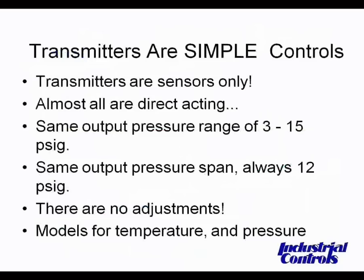The transmitters can be fed main air either from the receiver controller or it can be done remotely. When in the field or troubleshooting, you want to know where that restrictor is. Generally, start at the controller and see if that restrictor is feeding the transmitter, or if the restrictor is blocked within the receiver controller.